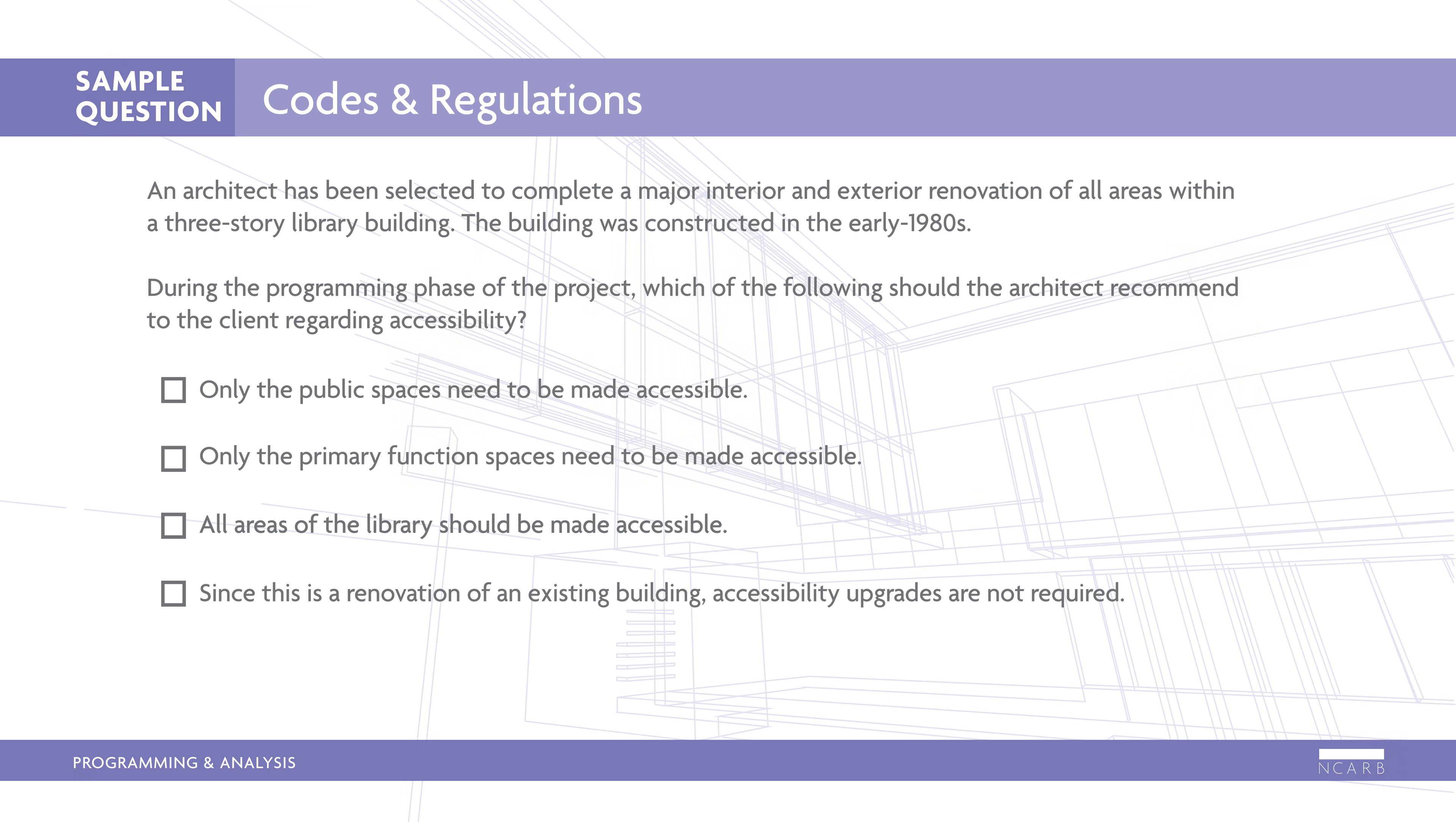Only the public spaces need to be made accessible. Only the primary function spaces need to be made accessible. All areas of the library should be made accessible. Or, since this is a renovation of an existing building, accessibility upgrades are not required.